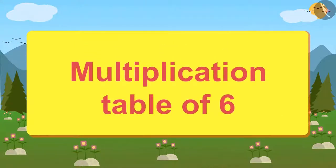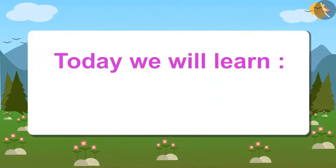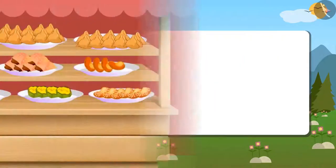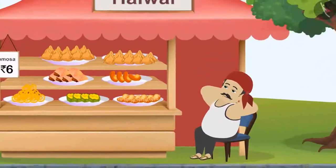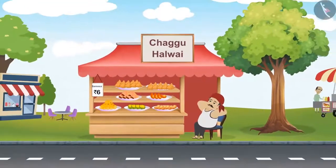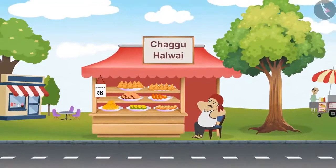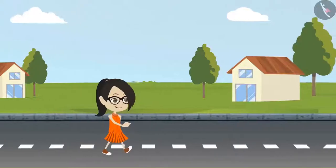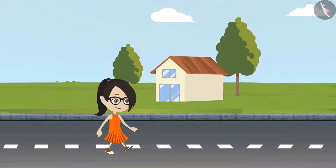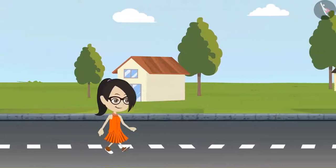Multiplication Table of Six. Today we will learn the Multiplication Table of Six. Chaggu Halwai makes very good samosas, and Vandana is going to get samosas from Chaggu Halwai's shop.